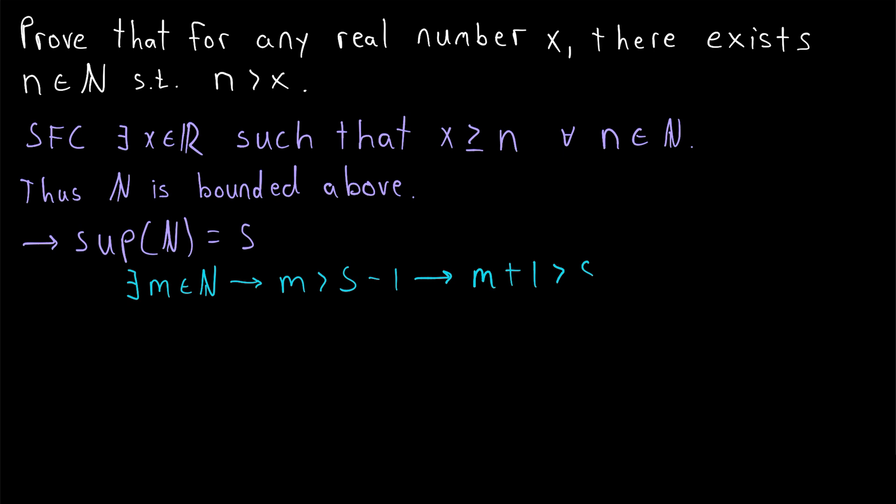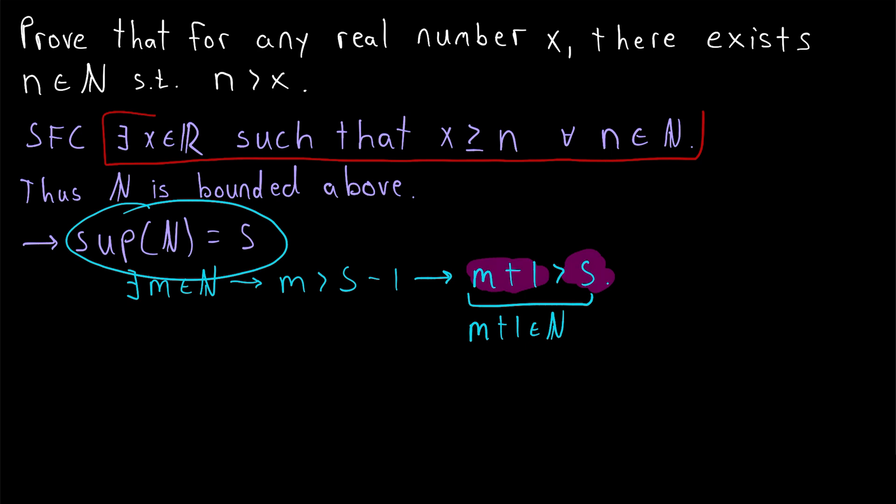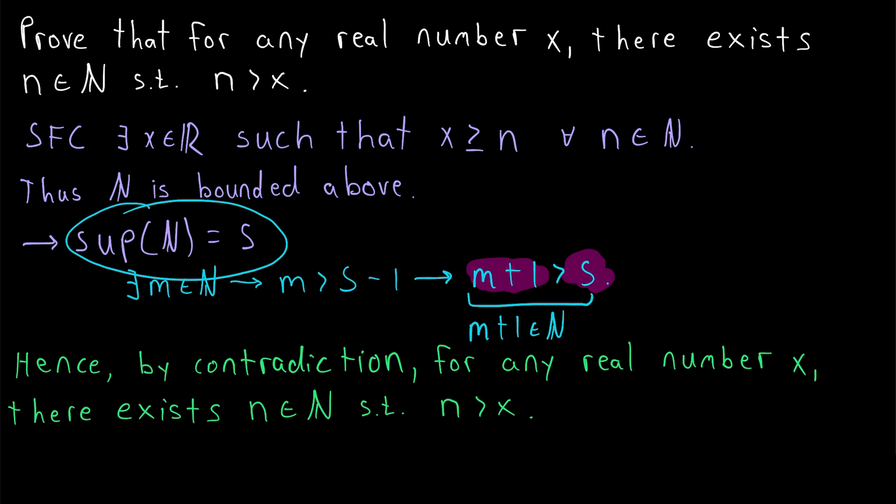And this, my friends, is a contradiction. It's a contradiction because M is a natural number. 1 is also a natural number. And the natural numbers are closed under addition. So M plus 1 is also a natural number. But that means we've found a natural number greater than the supremum of the natural numbers, which contradicts the definition of the supremum being an upper bound. Hence, our assumption that there exists some real number that's greater than or equal to every natural number must be false. And thus, since there cannot exist a real number that's greater than or equal to every natural number, we know that for any real number, there must exist a greater natural number. So we have proven our desired result, and thus we have proven the Archimedean Principle.